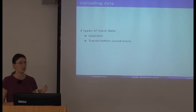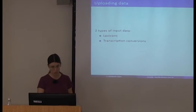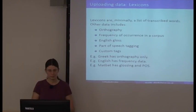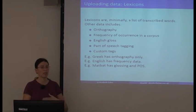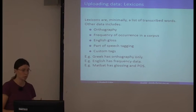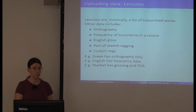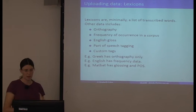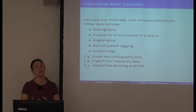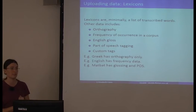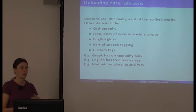The database takes in two different kinds of data: lexicons and things I'm calling transcription conversions. Lexicons are minimally a list of transcribed words. You can also include other information: orthography, frequency of occurrence in a corpus, a gloss (probably in English, to make cross-language comparison easier), part of speech tagging, and custom tags for whatever you want. For Sileti, one of the custom tags is 'Sanskrit', so you can find words of particular origin in your later work.